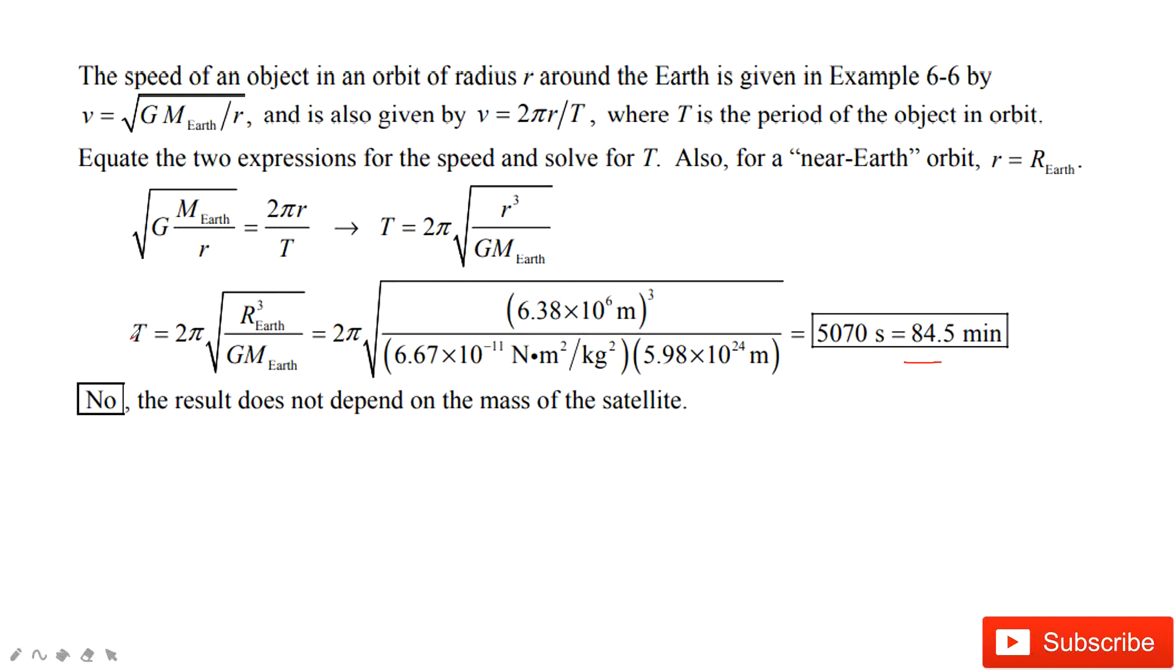So what do you think? For this equation, this period is not decided by the shuttle's mass. It only depends on the mass of the Earth, the radius, and the constant G. Thank you.